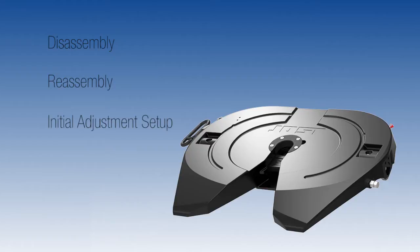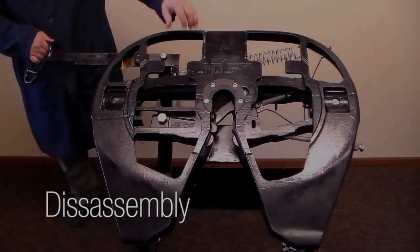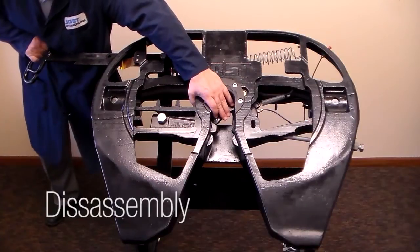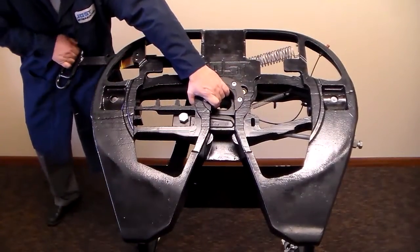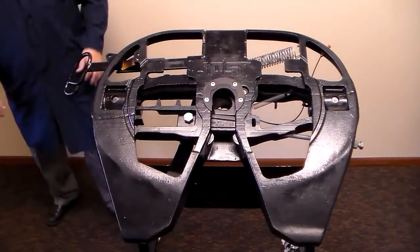Please note, this procedure can be completed without removing the fifth wheel from the tractor. Start the disassembly by closing the locking mechanism. Pull the release handle out and swing the lockjaw closed. Now let the release handle slide slowly to the closed position.